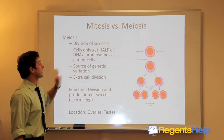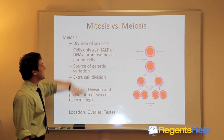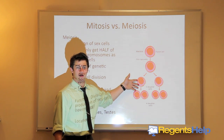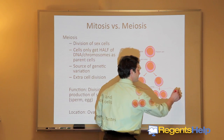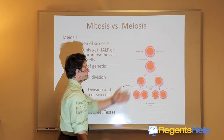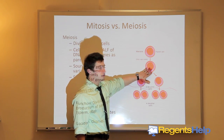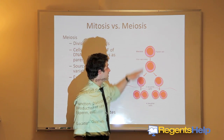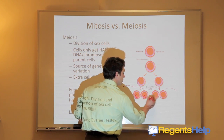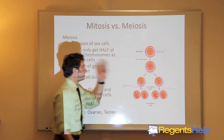Meiosis is the division of sex cells — sperm and eggs. The cells will only get half of the DNA and chromosomes as the parent because they undergo an additional round of cell division. Up until that extra round, it's the same as mitosis, but then there's another round of cell division in which the two cells become four. So we go from full DNA, doubled, then another division — each daughter cell gets only half of the DNA of the parent.